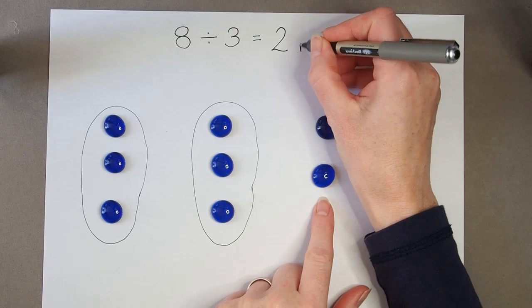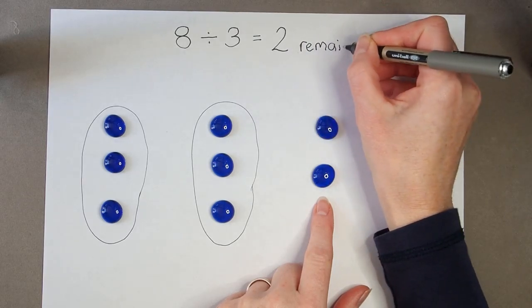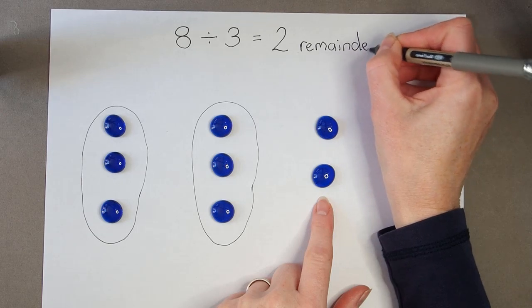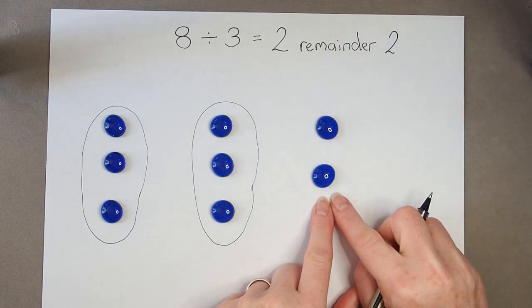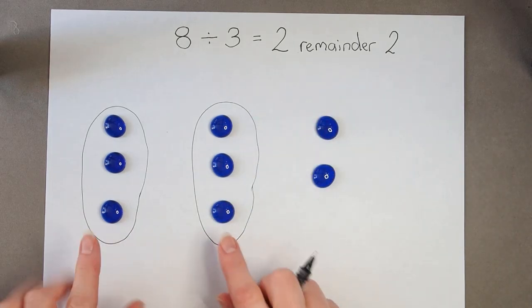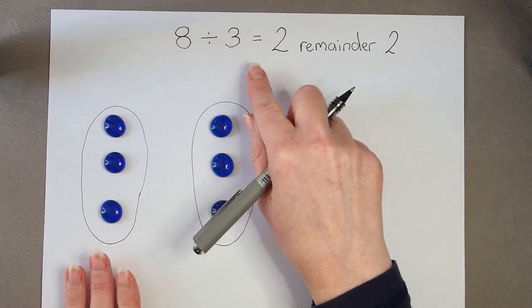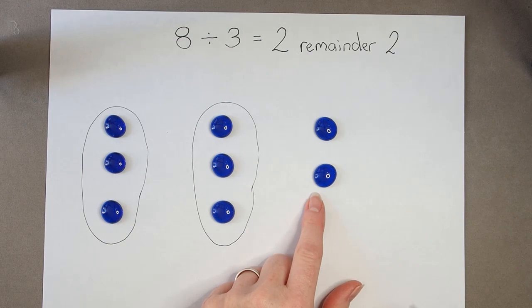So we call that the remainder. So I can write 2 remainder 2. So I could make 2 groups because 2 lots of 3 is 6, and I've got 2 left over.